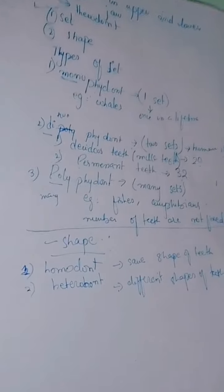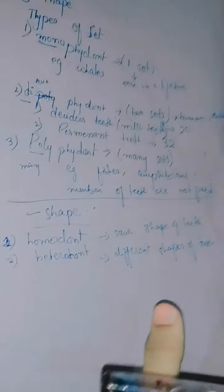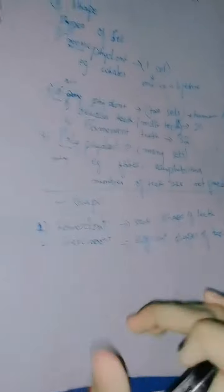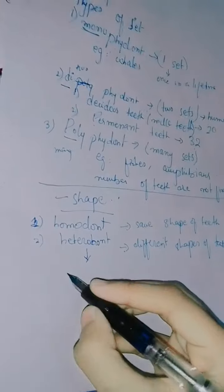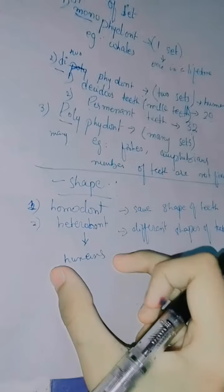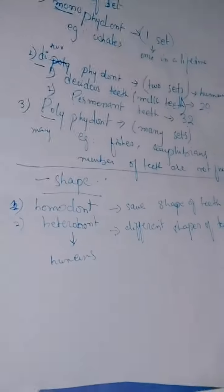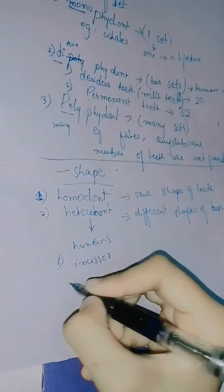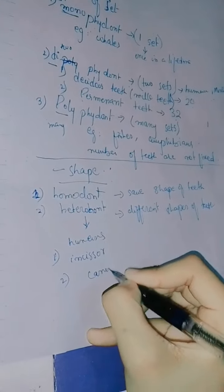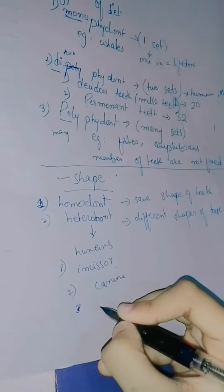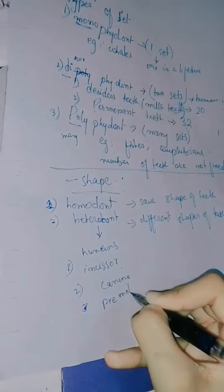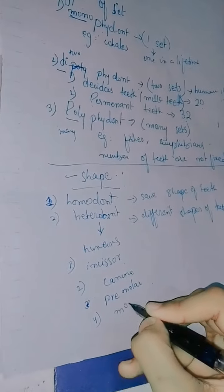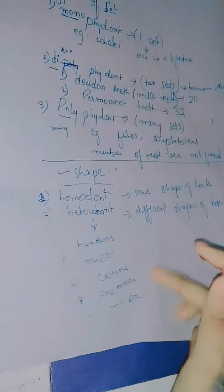In homodont organisms, such as some amphibians and fishes, all teeth are of the same shape. But some organisms, like humans, are heterodont — we have different shapes of teeth. We have four different types of teeth: first is incisor, second is canine, third is premolar, and the fourth is molar.